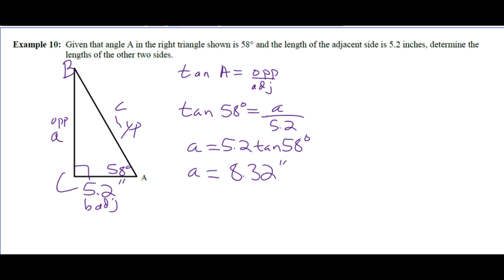They didn't specify rounding. On multiple choice it'll be obvious; for numerical response, if rounding isn't mentioned, your answer should be a whole number — that's the convention. If they want rounding to the nearest whole number, they should say so. If rounding isn't mentioned on a diploma numerical response, the answer should be a whole number.